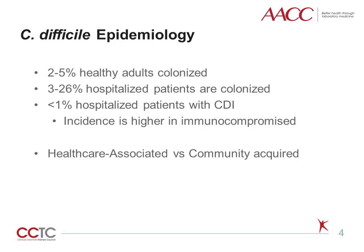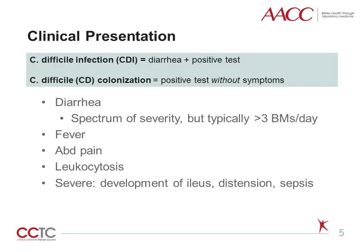Although C. difficile has been identified in patients in the community, the infection remains much more prevalent in the hospitalized patient population. C. difficile has now been identified in most countries of the world. C. difficile colonization, or asymptomatic C. difficile, is defined as a positive C. difficile diagnostic assay without symptoms. A C. difficile infection, however, is the presence of a positive test in a symptomatic patient.